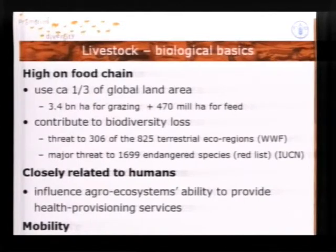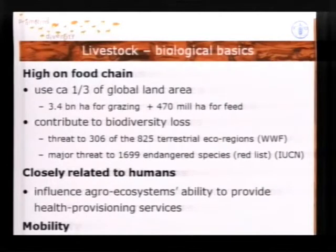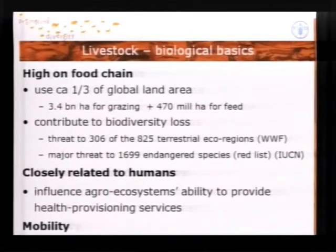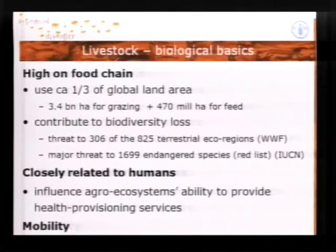This land extent leads WWF and IUCN to state that the livestock sector contributes to the loss of biodiversity at habitat and species level. The next important point is that livestock is closely related to humans, and 70% of the diseases of humans stem from the animal kingdom. That means the way we manage our livestock sector and deal with the ecosystem around it influences the ecosystem's ability to provide human health services. And lastly, livestock are mobile.